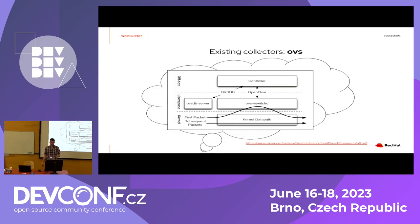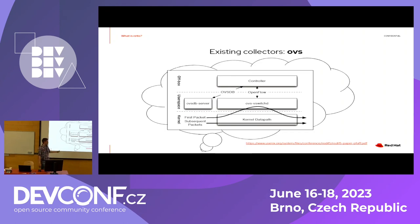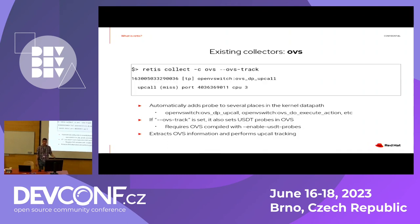We have an OVS collector. A quick reminder of how OVS works: it has a kernel data path that acts as a cache. The first time a packet is seen, it's sent to a user-space daemon for processing, then re-injected into the kernel with a flow telling the data path what to do with similar packets. The OVS collector traces this by adding automatic probes in both the kernel data path and the user-space daemon to extract all this information.